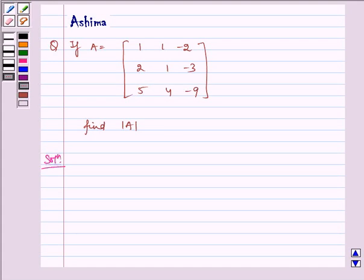Hello and welcome to the session. Let us understand the following problem today. If A is equal to the matrix [1, 1, -2; 2, 1, -3; 5, 4, -9], find the determinant of A. Now let us write the solution.